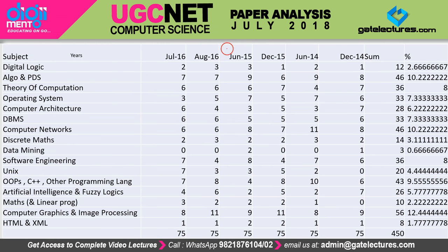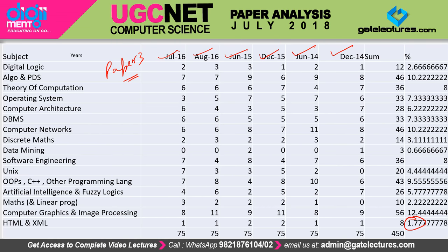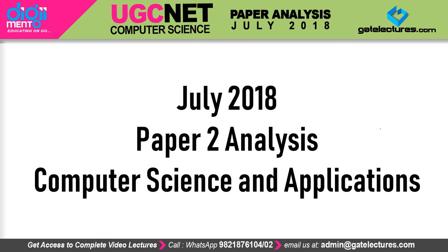This is the Paper 3 analysis for July 2016, August 2016, June 2015, December 2015, June 2014, and December 2014. As you can see, the percentage of questions from particular subjects — for example, from web technology (HTML and XML) we got 1.77%, computer graphics 12.5%, artificial intelligence and fuzzy logic 2.22%, and programming languages including object-oriented programming with C++ and Java gave us 5.77% questions, and so on.